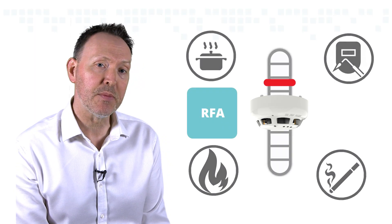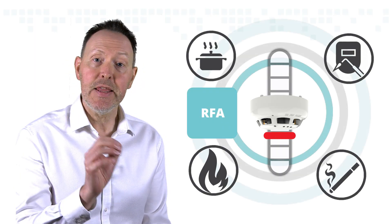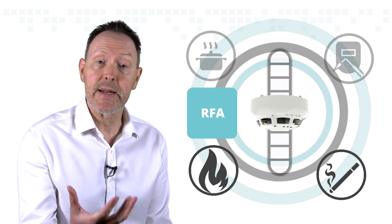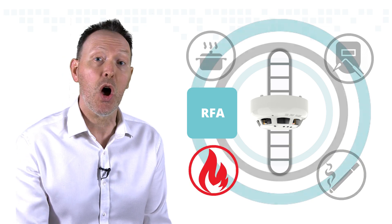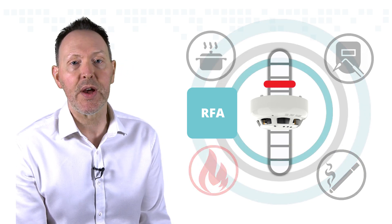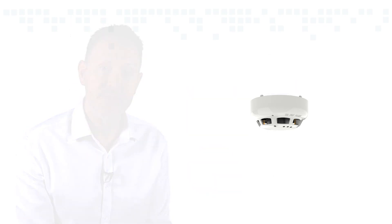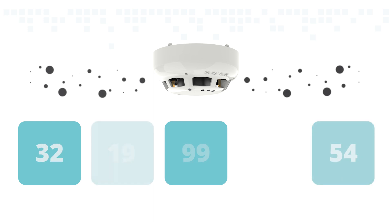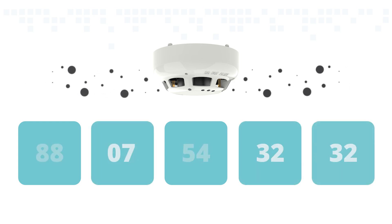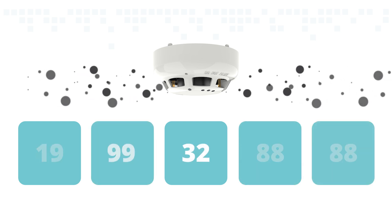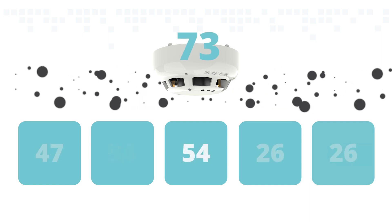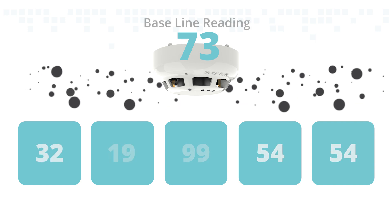The ACD has also been developed with the reduction of false alarms in mind with some clever software features. In the modes featuring the reduced false alarm function, the sensor will automatically adjust the sensitivity of the optical sensing element over time, learning from its surrounding environment in the moment of installation. It does this through a highly sophisticated algorithm which continually monitors the analogue value reading from a series of multiple samples of the environment and calculates an average value.